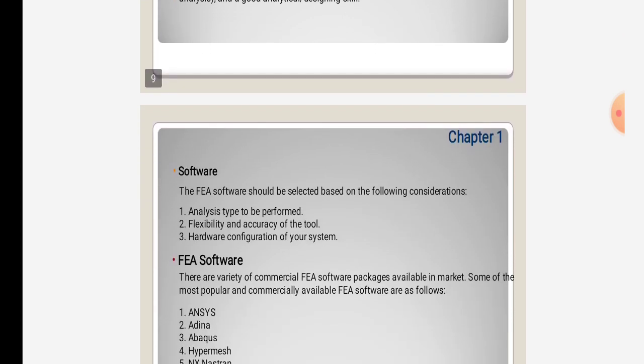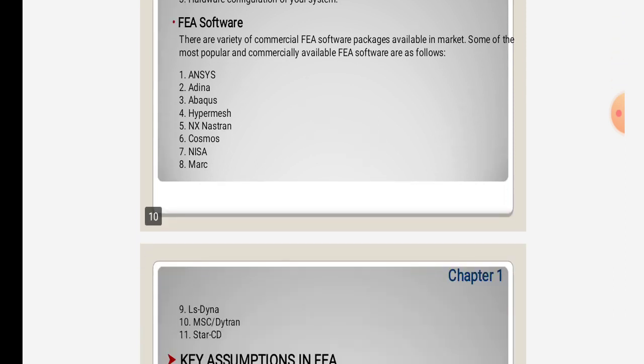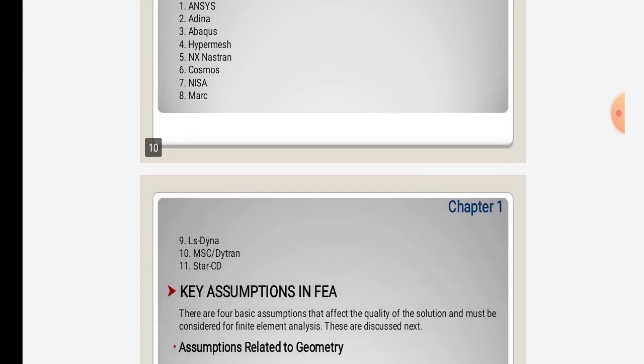For software, consider the analysis type to be performed, flexibility and accuracy of the tool, hardware, and configuration of your system. FEA software options include ANSYS, ADINA, ABAQUS, HyperMesh, IDEAS, NASTRAN, COSMOS, NISA, MARC, ANSYS LS-DYNA, MSC, and STAR-CD.